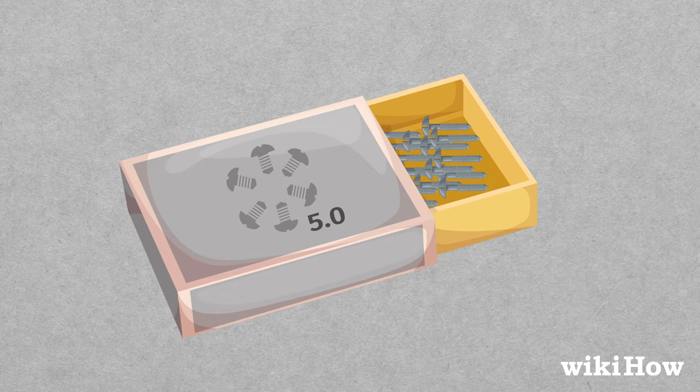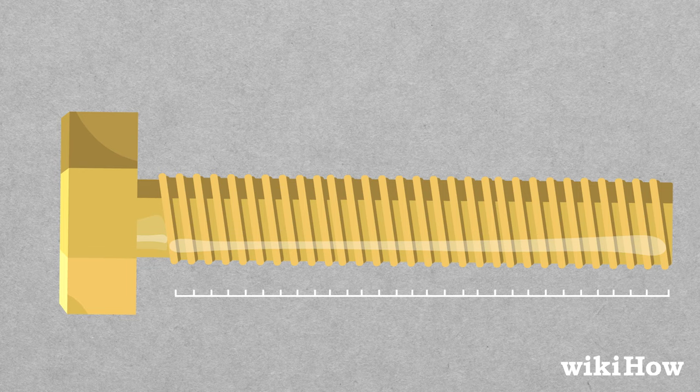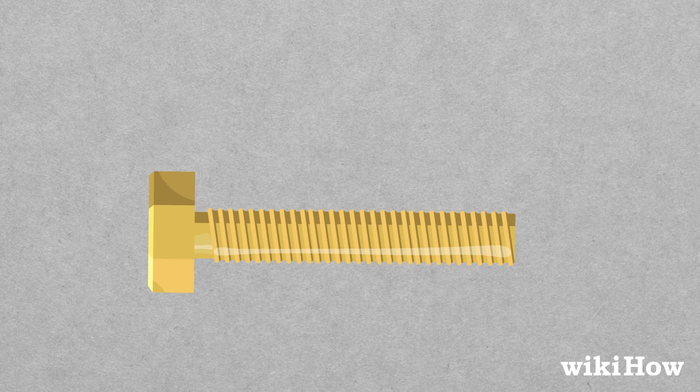The final common measurement for screws has to do with the number and spacing of the threads or the thread pitch. In the imperial system, you'd measure this by calculating the number of threads per inch. Line the screw up next to a ruler or measuring tape, and count how many threads you see in the space of an inch. The most common pitch numbers are between 35 and 40 threads per inch.